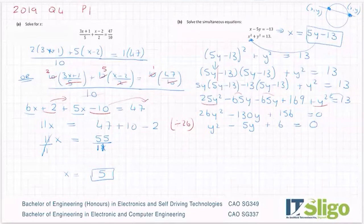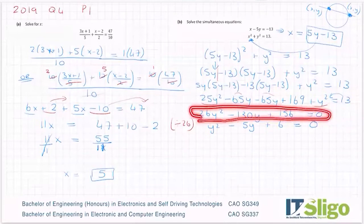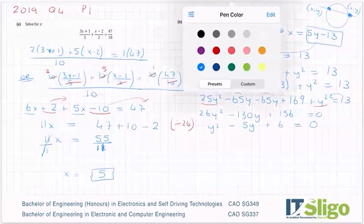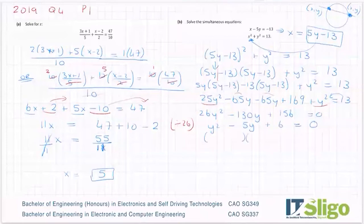That's far easier to solve than the other one. No problem at all if you wish using the minus b formula on this, where a is 26, b is -130, and c equals 156. If I can't find the factors, or if I can't simplify, that's exactly how I would do it.